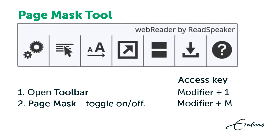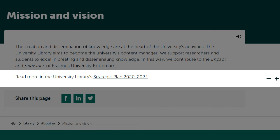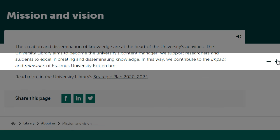If the toolbar is open, click the page mask button to toggle page mask on or off. Or use the access key Alt plus M to open page mask in Chrome and Edge in Windows. By selecting page mask, a horizontal reading bar shades the surrounding areas of the screen so you can better focus.